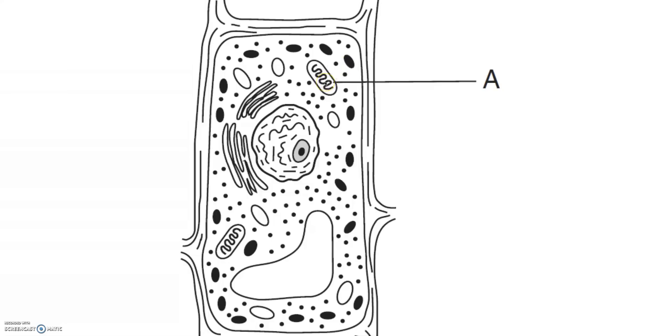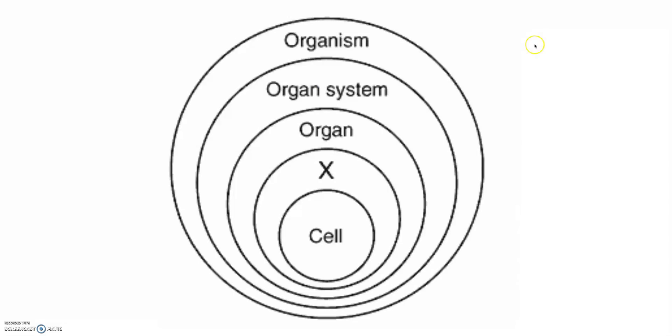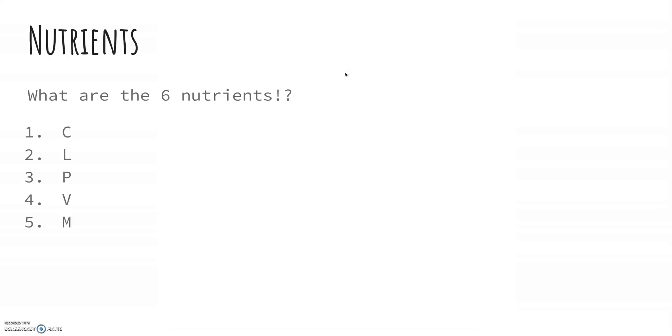This is where cellular respiration happens, this is where ATP energy is made, the powerhouse of the cell. Know your levels of organization from smallest to largest and from largest to smallest, so smallest being the cell, then tissue, then organ, organ system, organism.